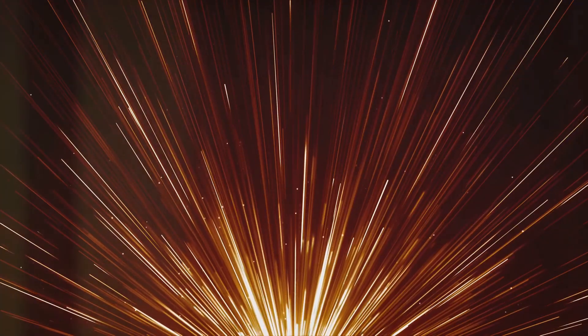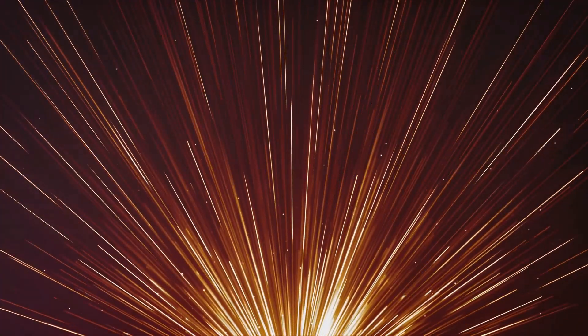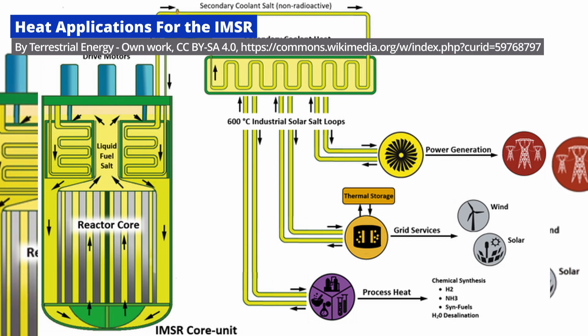In a typical thorium reactor setup, thorium-232 is bombarded with neutrons, converting it into uranium-233, a fissile material that then sustains the nuclear chain reaction, producing heat which generates electricity.